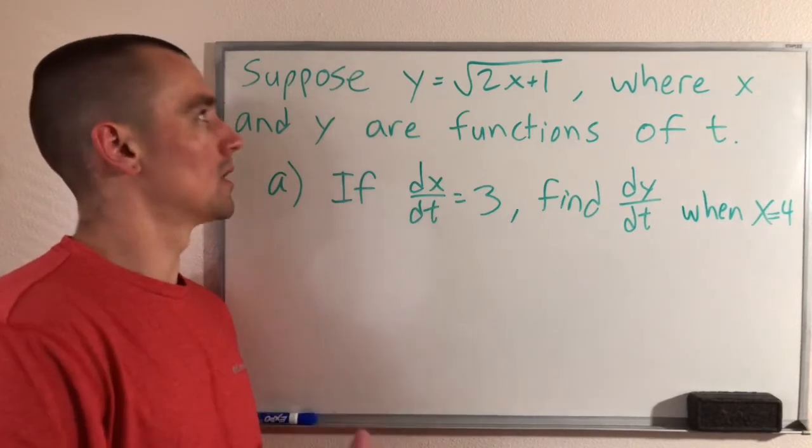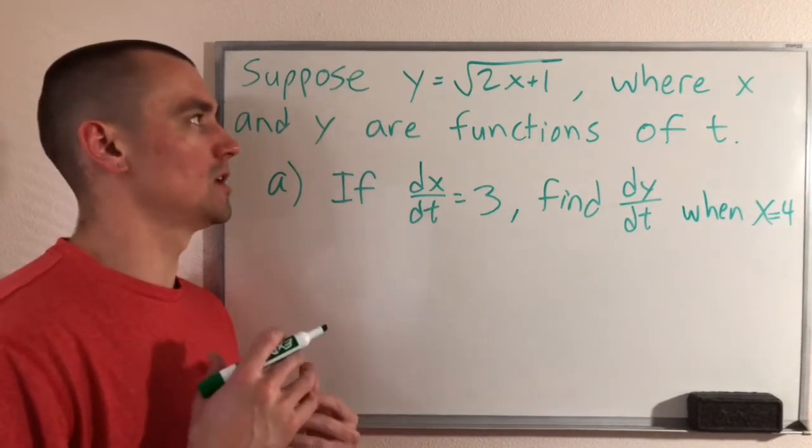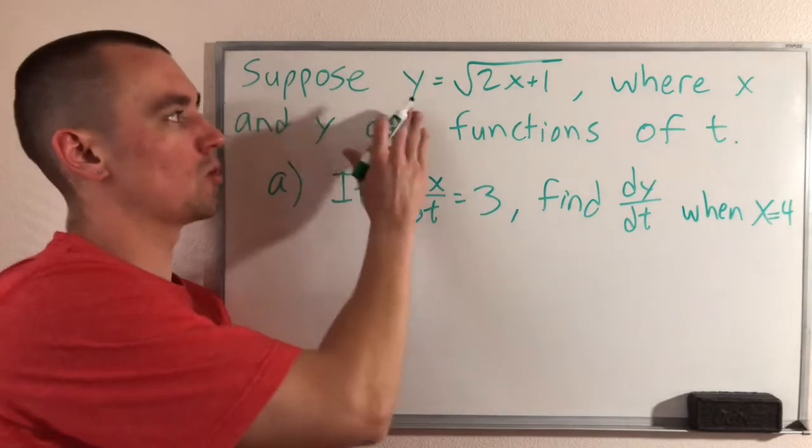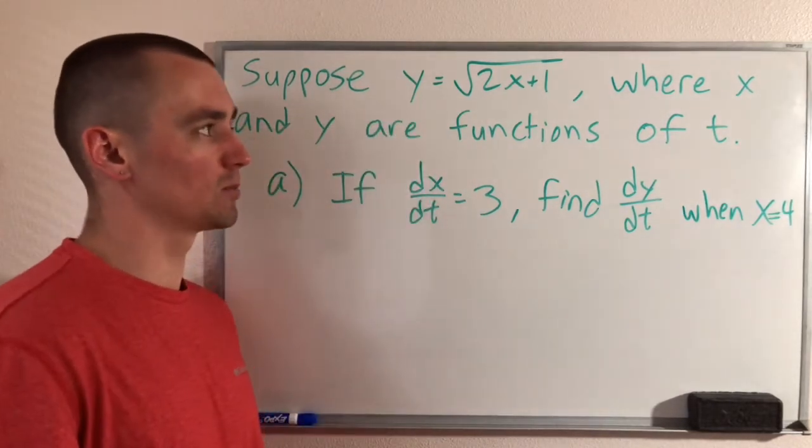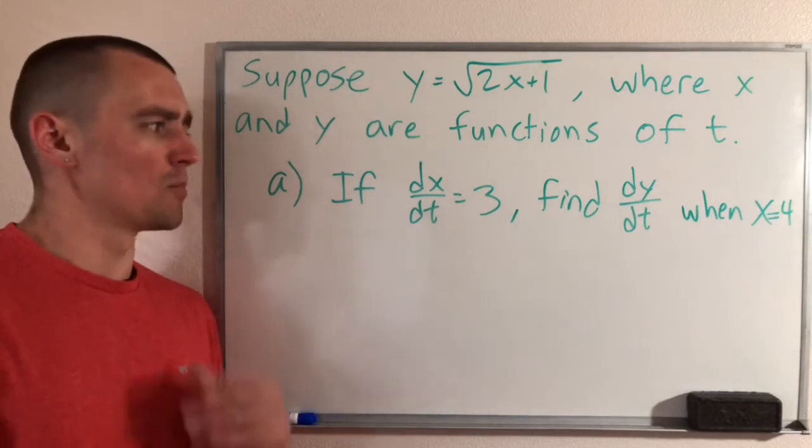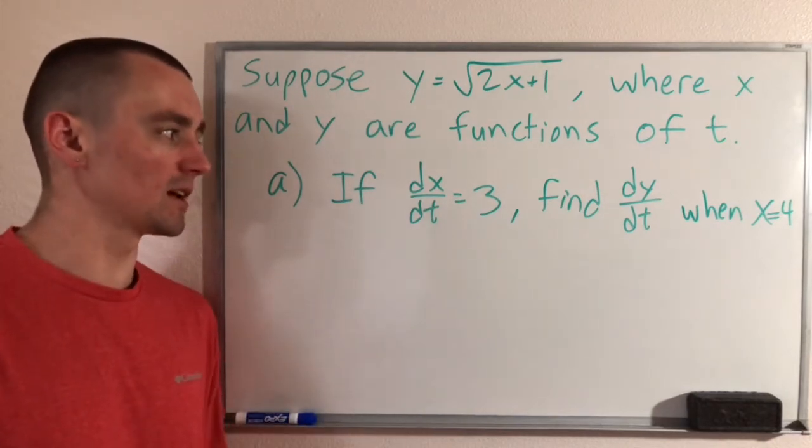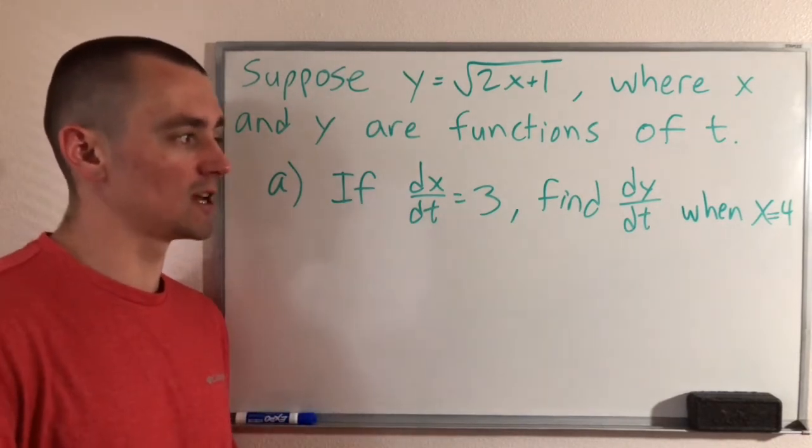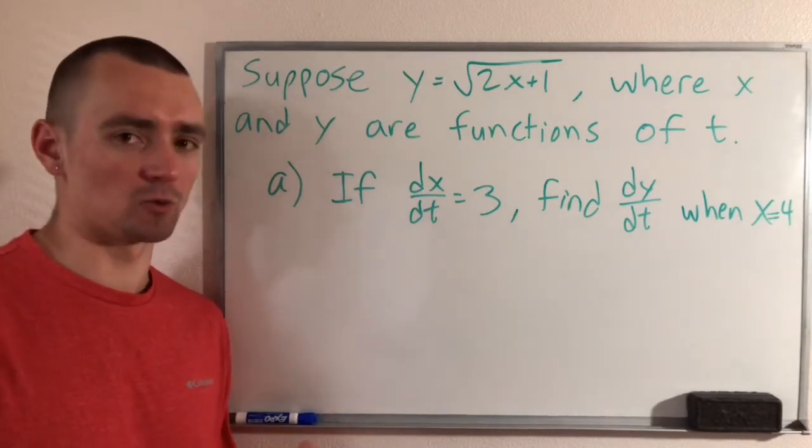This is the first part. Basically, we are given that suppose y equals the square root of 2x plus 1, where x and y are functions of t. Part A is going to be if dx/dt equals 3, find dy/dt when x equals 4.